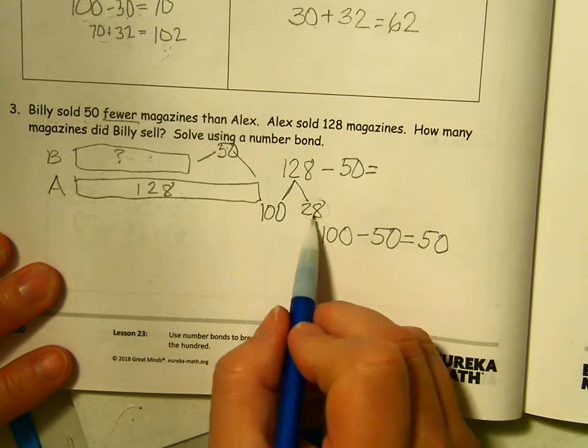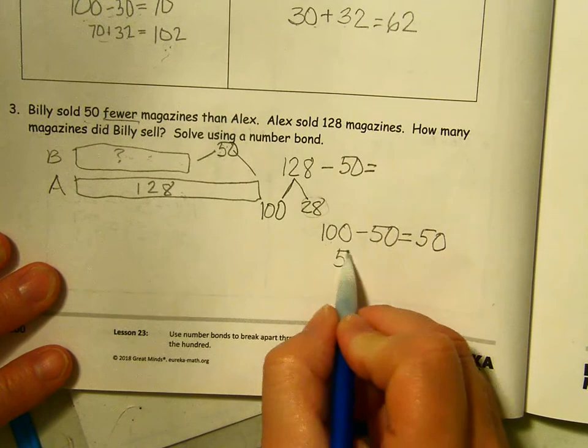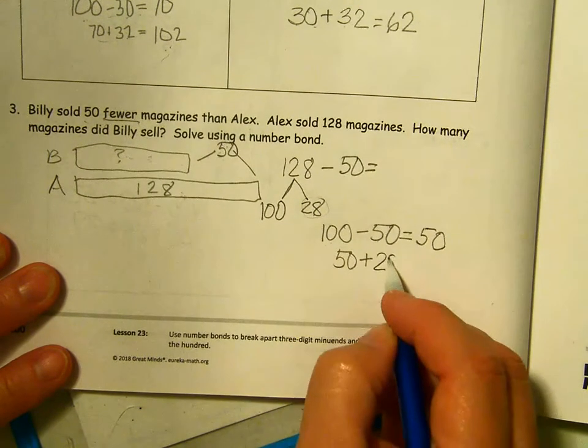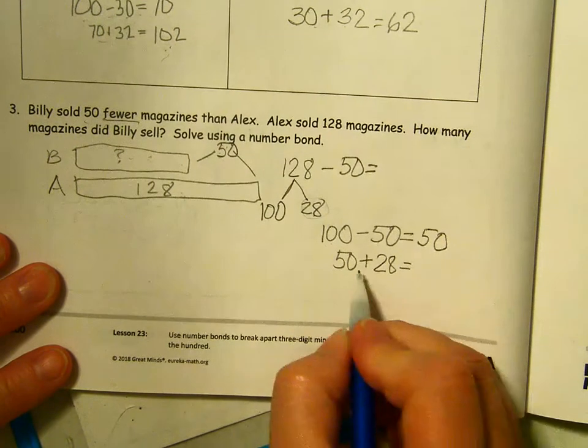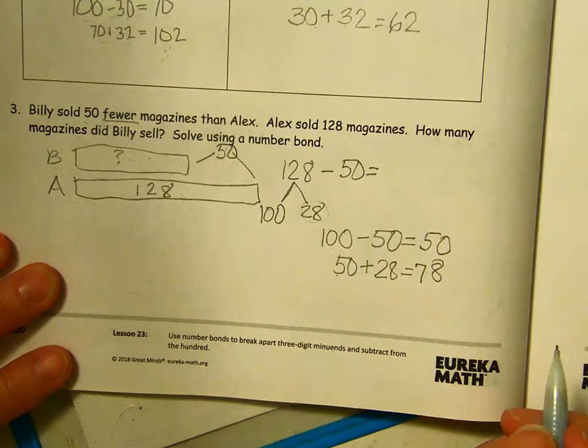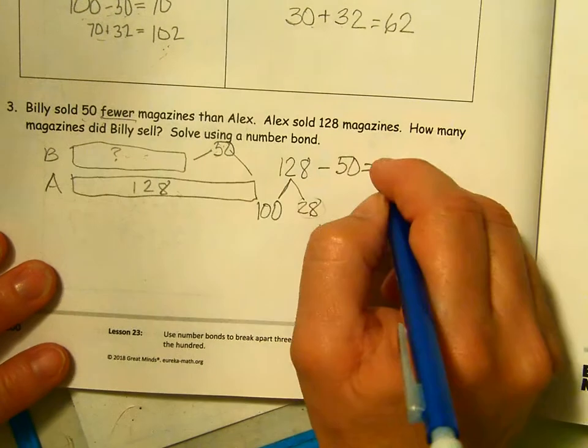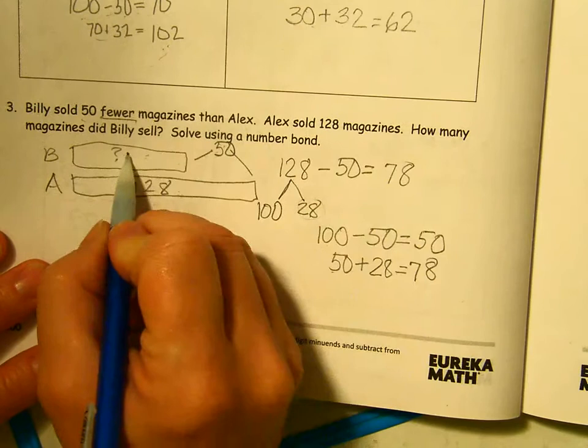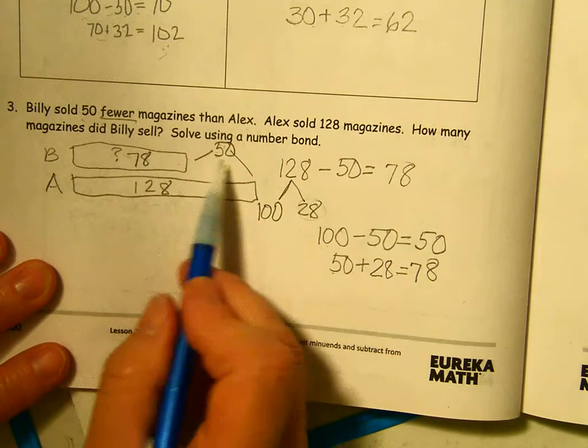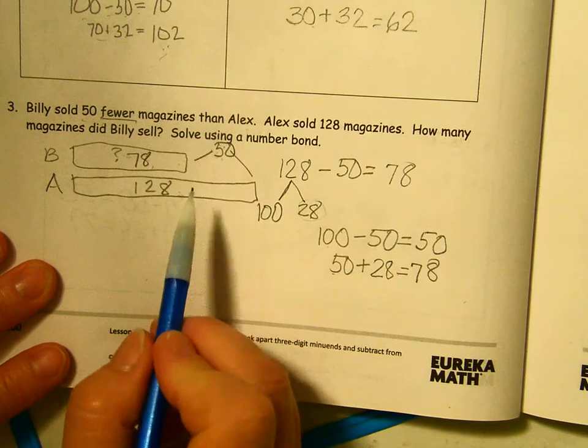Now we have to add in that part we took out to make it easy for ourselves. So we have 50 plus 28. 0 and 8 is 8. 5 and 2 is 7. 128 minus 50 is 78. That's this part. That's the other part. 78 is 50 fewer than 128.